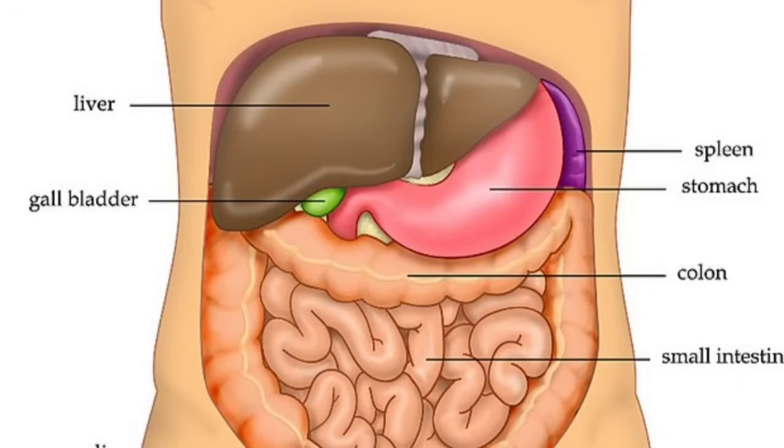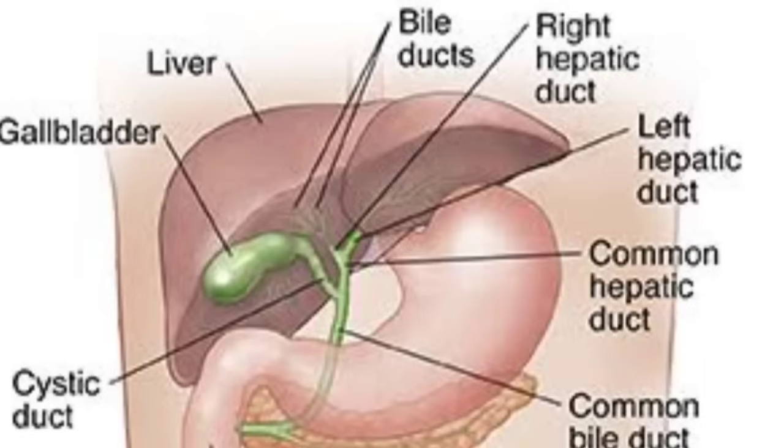The liver is the largest organ in the body. It is located towards our right side, upper quadrant. The liver helps with digestion, glycogen storage, production of bile for digestion, blood detoxification, and liver balance. This is why the liver is so important.